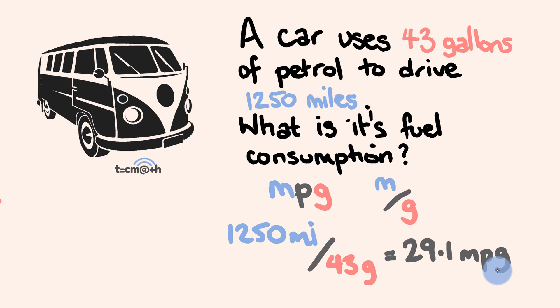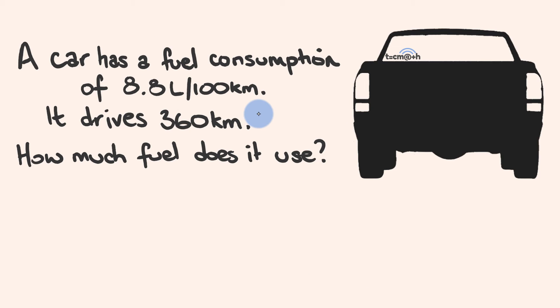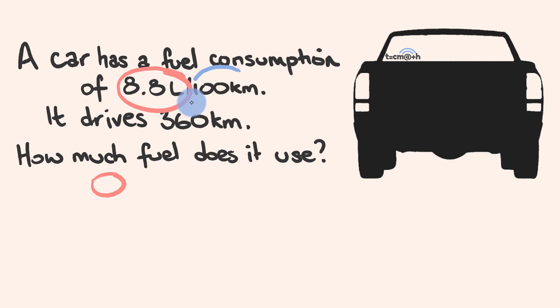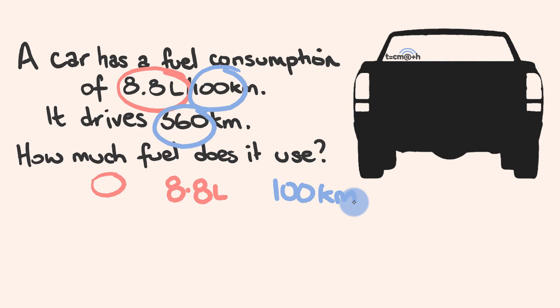Now let's look at how you apply these once you know your fuel consumption. A car has a fuel consumption of 8.8 litres per 100 kilometres. It drives 360 kilometres. How much fuel does it use? We know 8.8 litres takes us 100 kilometres, but we want to go 360 kilometres. We need to work out proportionally how much petrol we need — how much bigger is 360 than 100?